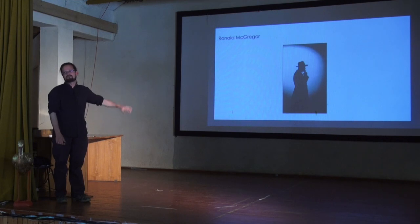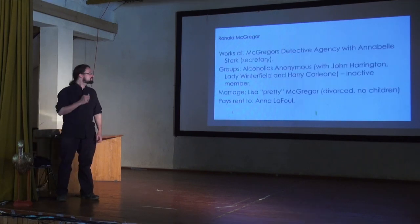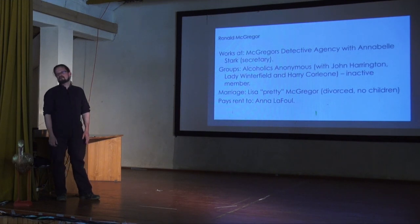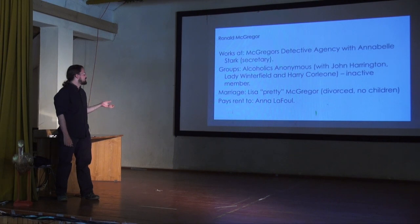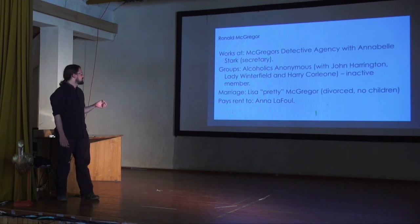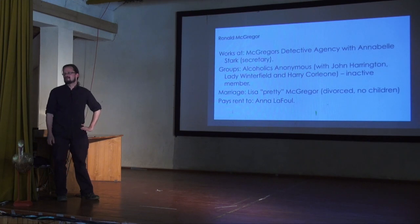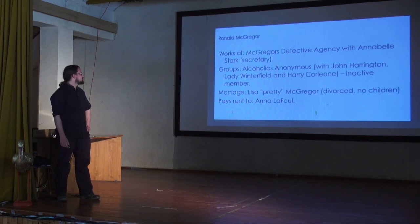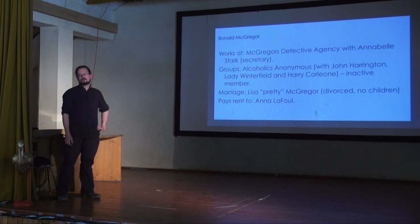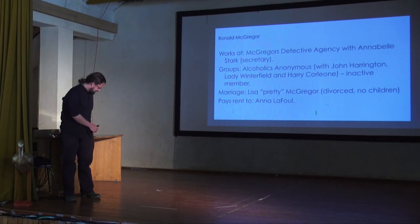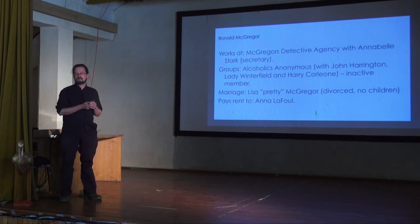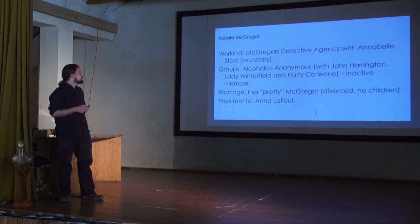Or we could drop all the text and send the player a picture — do we really need to say much more? In addition, costume suggestions can define a character. Or we could define the character through relationships: Ronald McGregor works at McGregor's Detective Agency together with Annabelle Stark, his secretary. He is an inactive member of Alcoholics Anonymous with John Harrington, Lady Winterfield, and Harry Carione — so those three might ask why he hasn't been to meetings recently. He was married to Lisa Pretty McGregor, now divorced. He pays rent to Anna LaFoul, who knows he hasn't paid in a while.